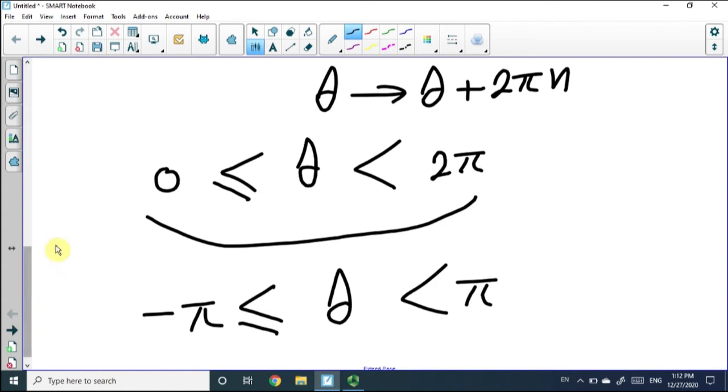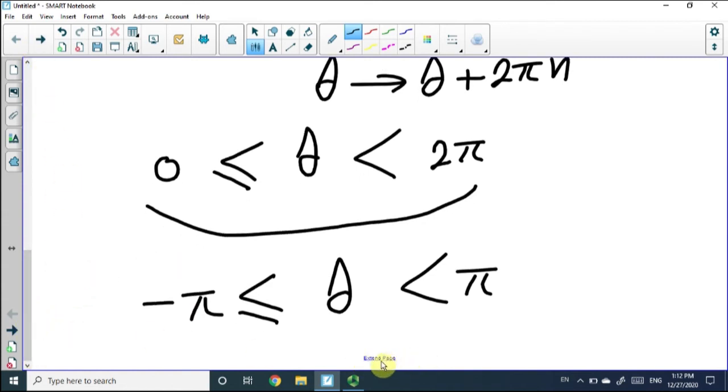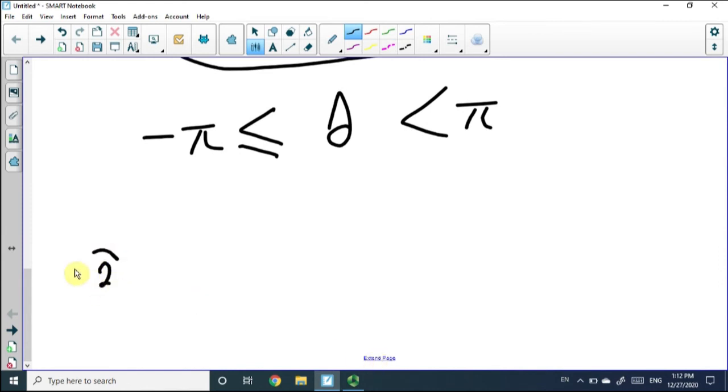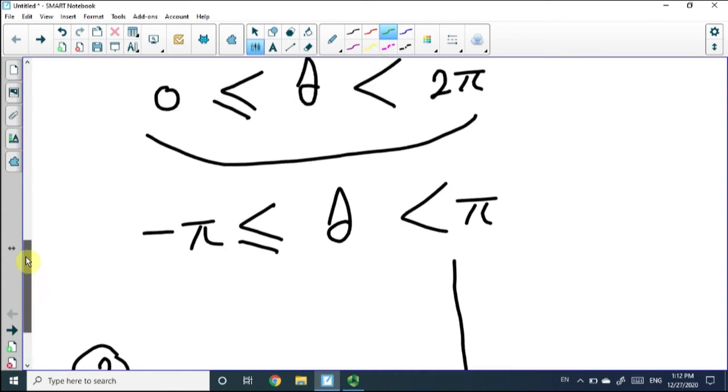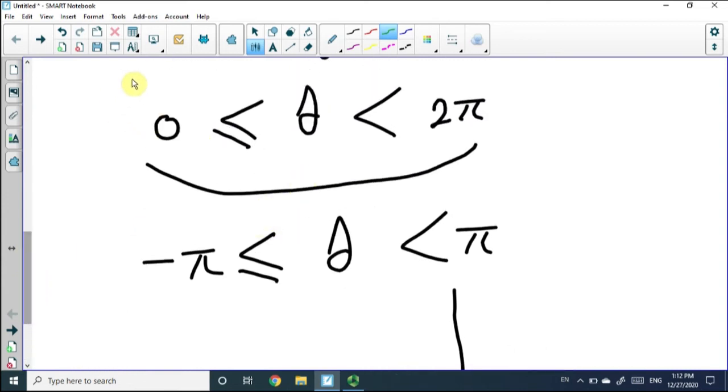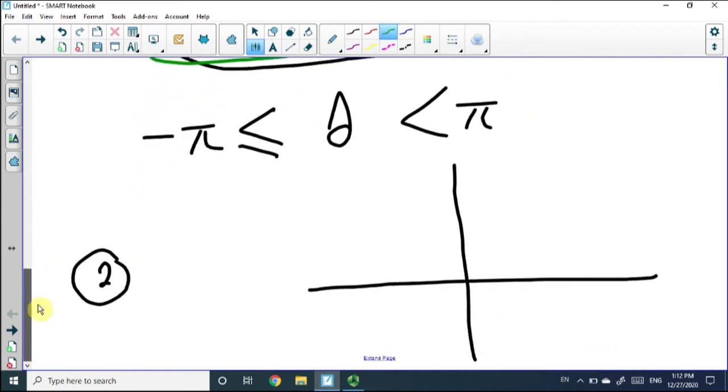However, there's still another issue with this function. Let's try to explain what is the second issue. Let's draw the complex plane. Let's choose one of these choices. For example, let's choose this one. Theta will be between zero and goes up to two pi.